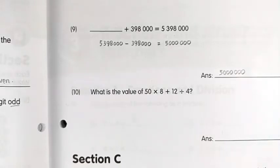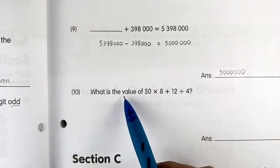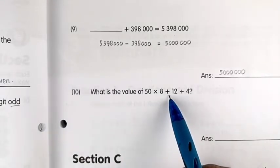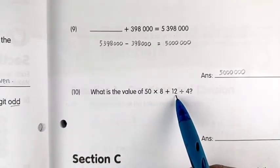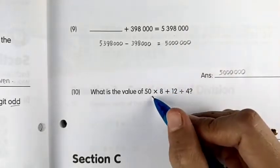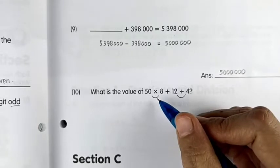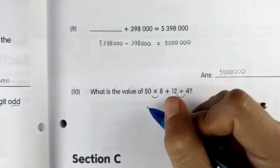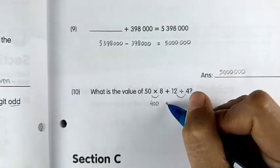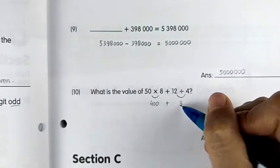Number ten: what is the value of 50 multiplied by 8, plus 12 divided by 4? We do the multiplication first — the answer is 400 — and then we add the division result of 3, giving 403.